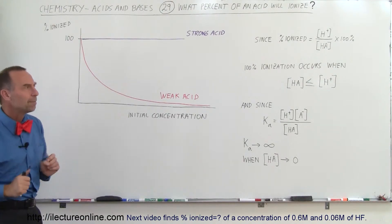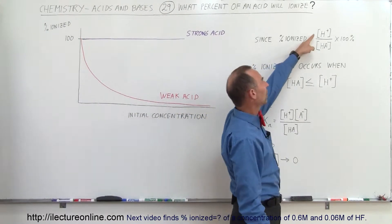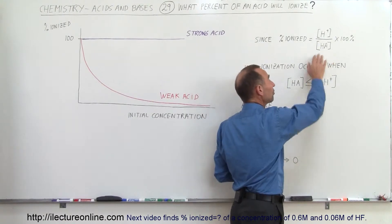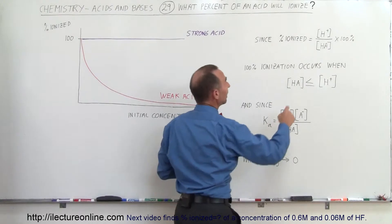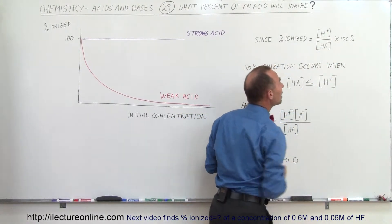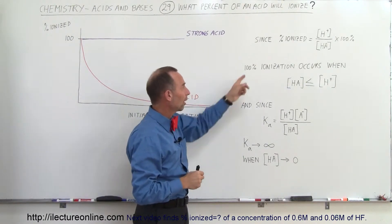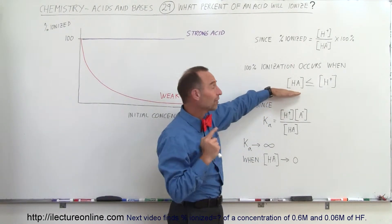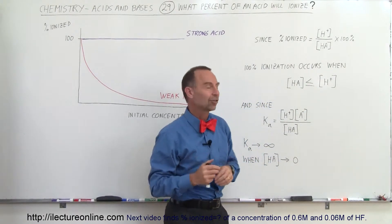So what does that really mean? Since we know that percent ionized is simply the ratio of the concentration of the hydrogen ion divided by the concentration of the acid, the final concentration, and multiply times 100%, notice that if a small amount of the hydrogen gets put into the solution, then the ionization percentage, of course, is small. So 100% ionization will occur when the final concentration of the acid in the solution is smaller than or equal to the final concentration of the hydrogen ion.